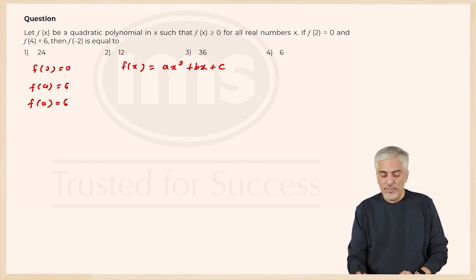Now, initially what do I know? I know that if I use this one taking x as 0 I should get answer as 6. So 6 is equal to 0 plus 0 plus c. So c is 6. So my first thing which I got c is 6.